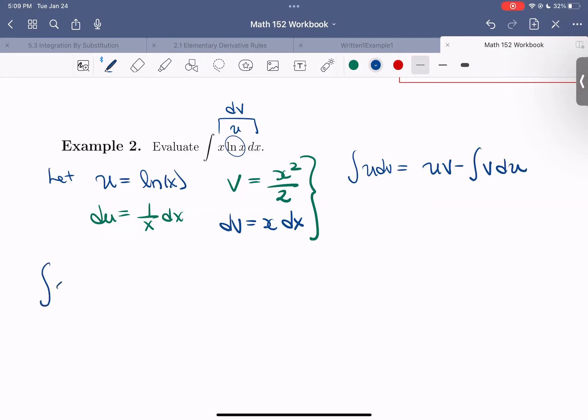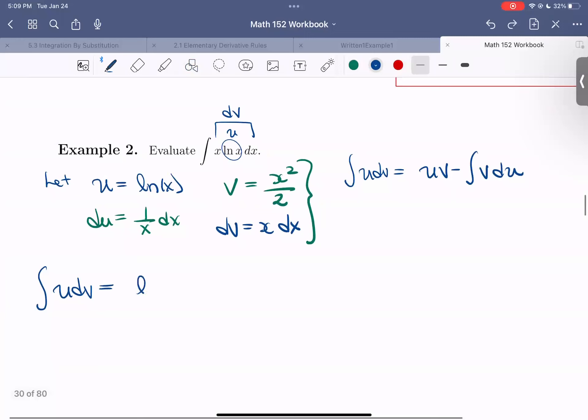That means our integral, u dv, is equal to u times v. Multiplication is commutative. ln of x times x squared over 2. Not too bad so far. Minus the integral now v du. So the integral of x squared over 2 times 1 over x dx.